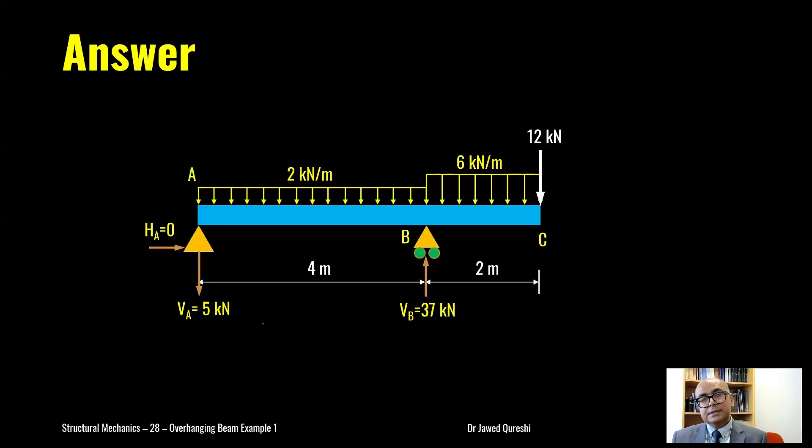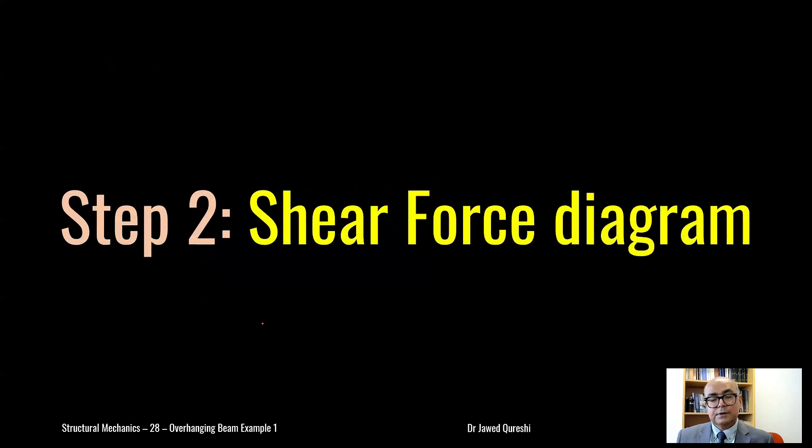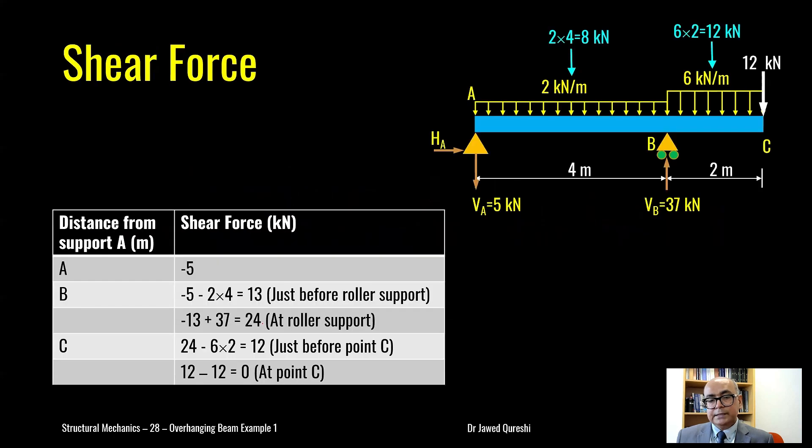Now this is the complete answer where you can see all the reactions: HA equal to zero, vertical reaction at A is 5 kN and vertical reaction at B is 37 kN. Second step is to find out shear force diagram. For finding shear force diagram I have to start from left and I have to add up all the vertical forces. Shear force is acting at perpendicular direction to the member axis to beam axis.